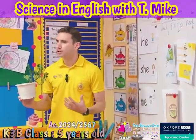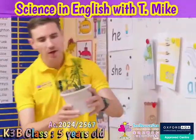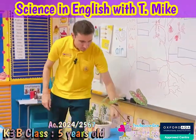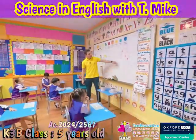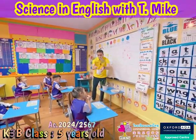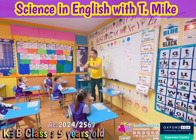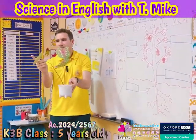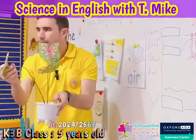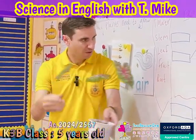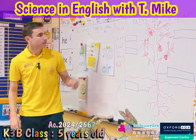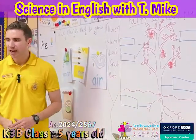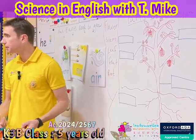You cannot see the roots because they are in the soil. The roots act almost like a straw to drink up the water. Both of these plants have roots. This part here is the stem. And we have the leaf. Some plants have flowers and fruit.